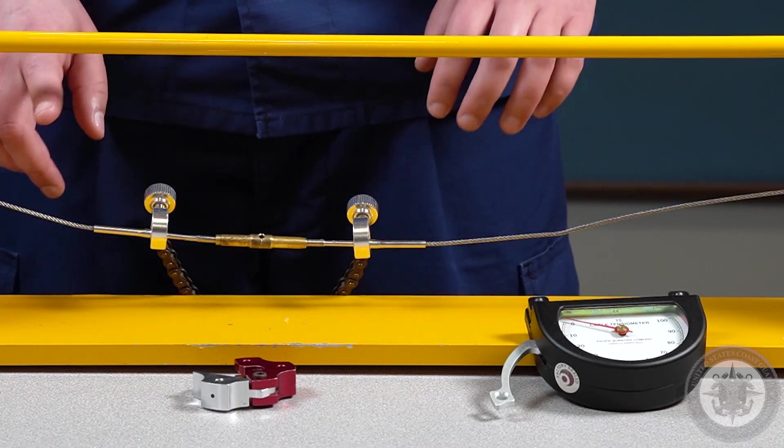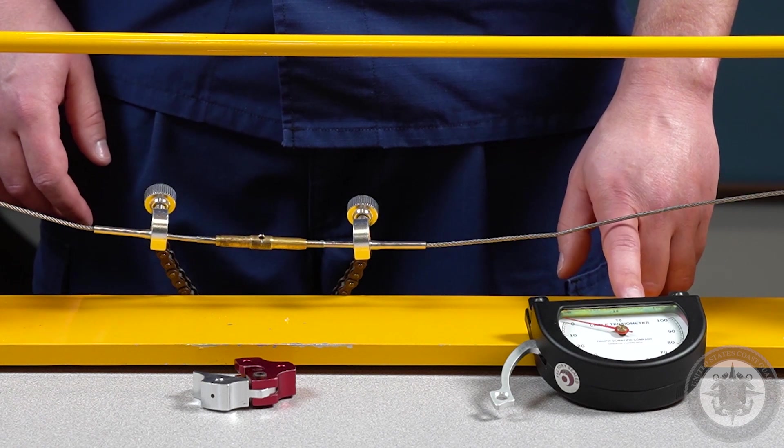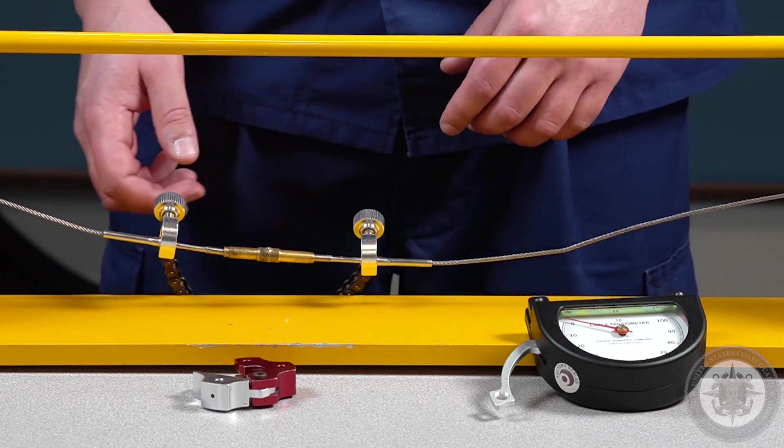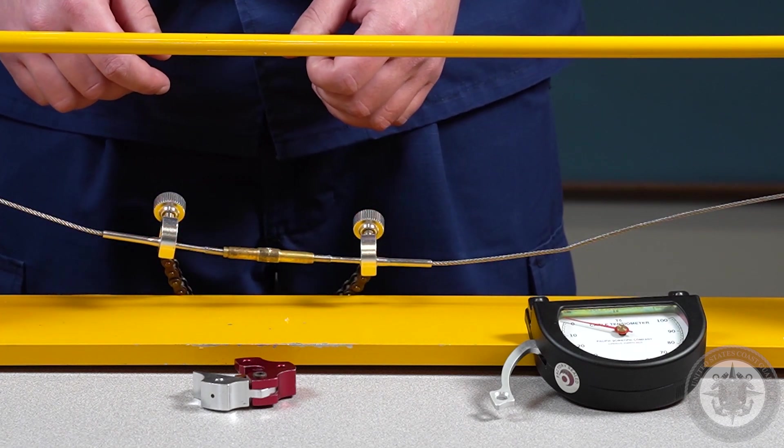Here we have our cable trainer with a 3/32nd inch cable assembly, our T5 cable tensiometer, our turnbuckle I already have started here, and we also have our cable chain tool that we'll be using to adjust our cable tension.